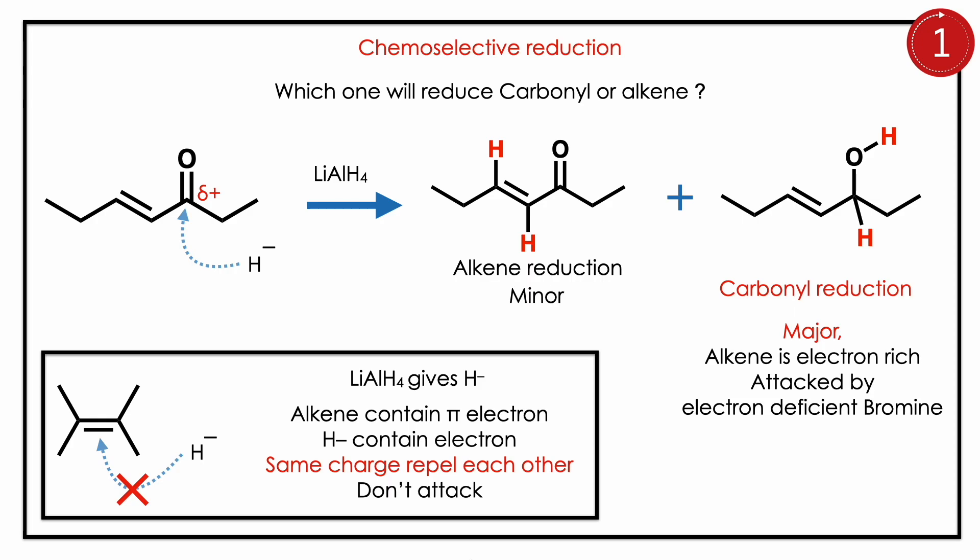The carbonyl can be reduced because it possesses a partial positive charge, so H⁻ can attack it easily. The final product will be selective reduction of the carbonyl, not the alkene — carbonyl reduction is the major product. The concept to learn here is chemoselective reduction: lithium aluminium hydride is very selective toward the carbonyl.